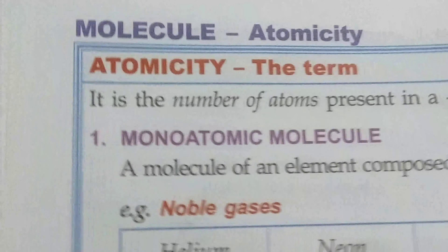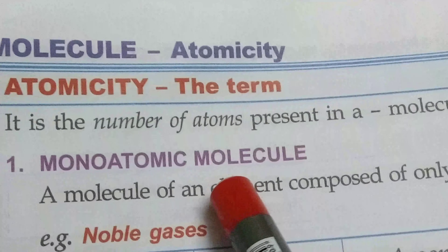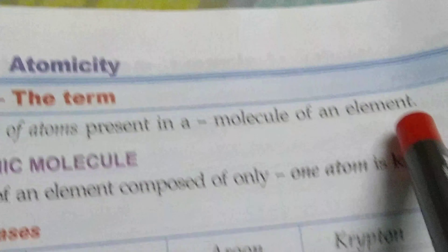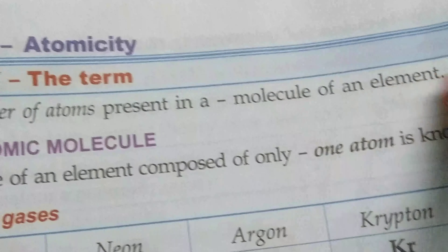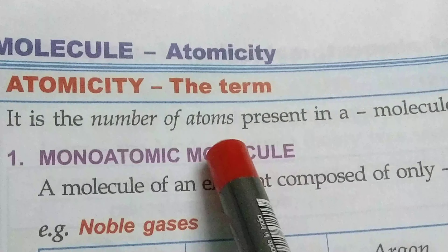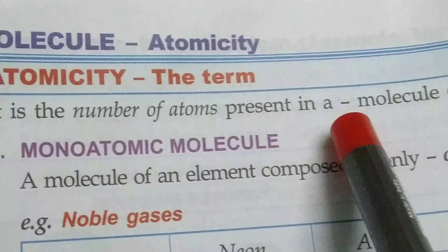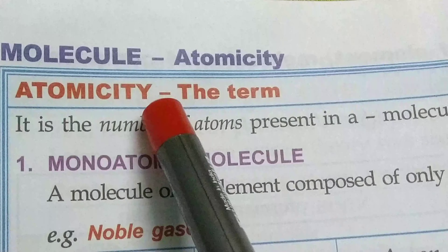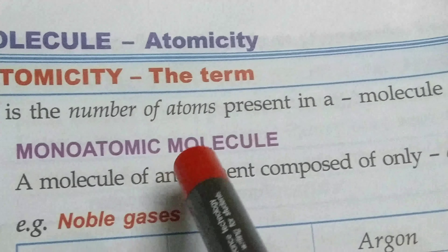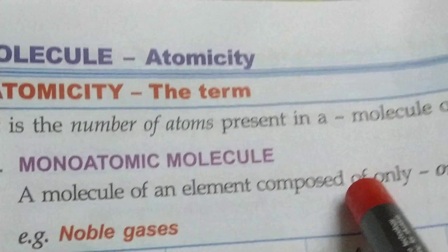Next: atomicity. It is the number of atoms present in a molecule of an element. Element ke ek molecule ke andar jitna atoms present hai, this number is also known as atomicity. So what is atomicity? The number of atoms present inside a molecule of an element.